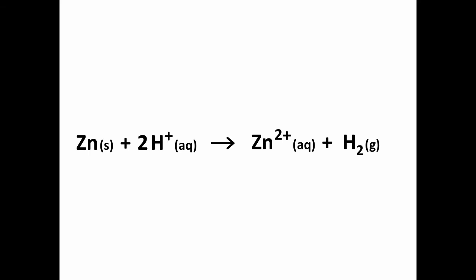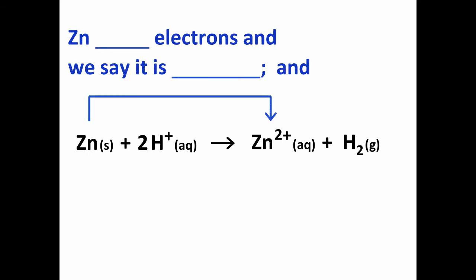Now, let's look in a little more detail at this reaction. The key thing to note here is that the zinc solid we started with reacts to make zinc 2 plus ions, so the zinc lost electrons, and the chemical term for a process where electrons are lost is oxidation. We say that the zinc is oxidized in this reaction.